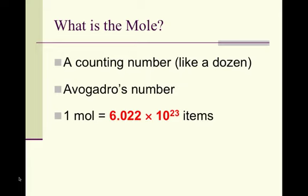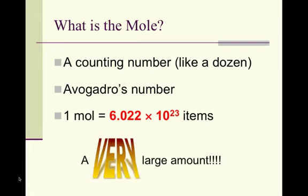So if I had a mole of donuts, I would have 6.022 times 10 to the 23rd donuts. Very similar to if I had one dozen of donuts, I would have 12 donuts. It is a very, very large amount.